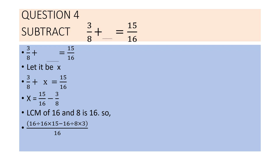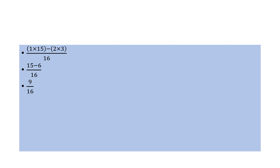As the denominators are not the same, we find the LCM of 16 and 8, which is 16. Applying the formula: 16 divided by 16 into 15, minus 16 divided by 8 into 3, upon 16. This gives 1 into 15 minus 2 into 3 by 16, which is 15 minus 6 by 16, giving 9 by 16 as the answer.